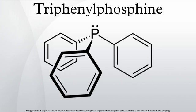PPh3 combines with most alkyl halides to give phosphonium salts. The facility of the reaction follows the usual pattern whereby alkyl iodides and benzylic and allylic halides are particularly efficient reactants: PPh3 + CH3I → CH3PPh3⁺I⁻. These salts, which are readily isolated as crystalline solids, react with strong bases to form ylides. Such ylides are key reagents in the Wittig reaction, used to convert aldehydes and ketones into alkenes.